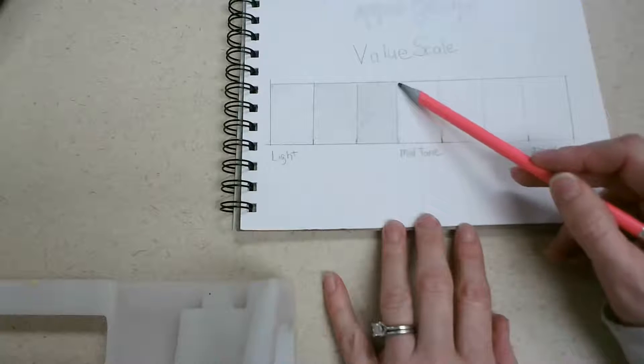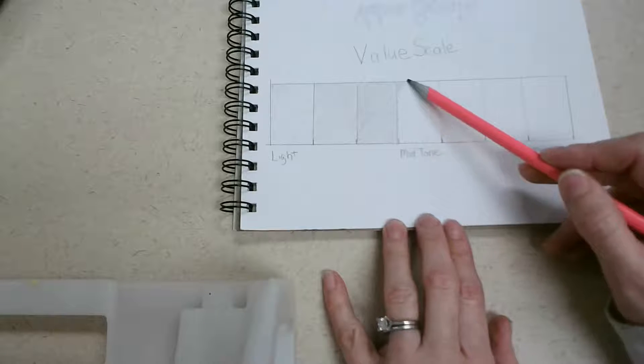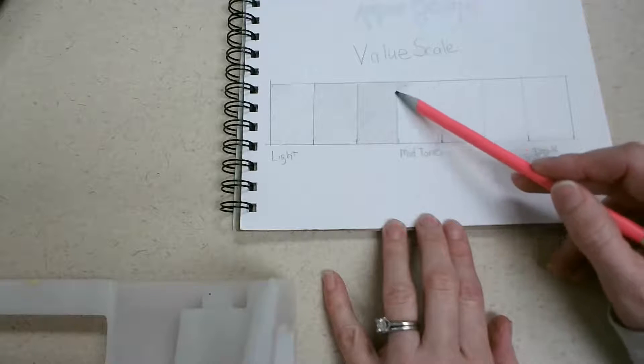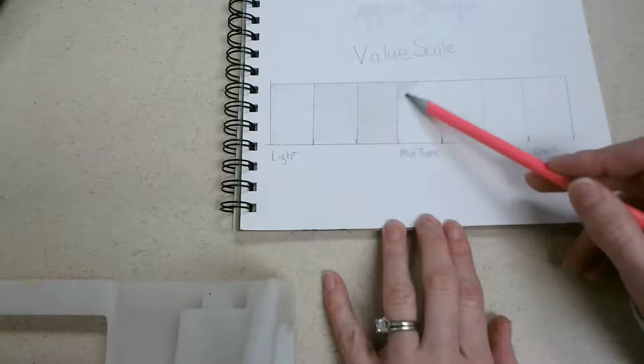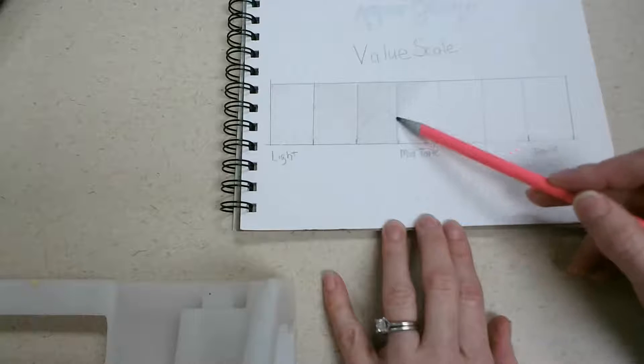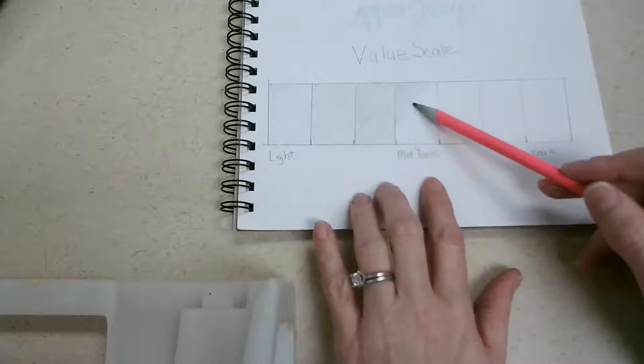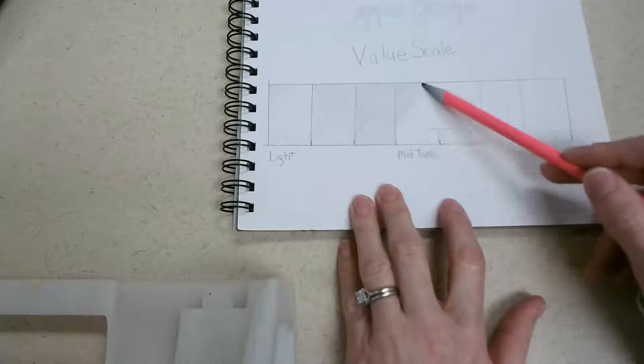Okay, so then my next box, this will be my midtone. So this is like middle of the road, not too dark, not too light. If I were to draw with my pencil, it should be pretty close to my midtone.